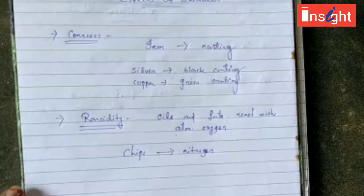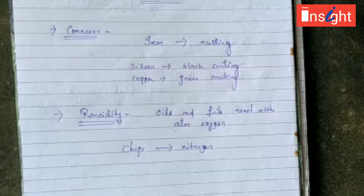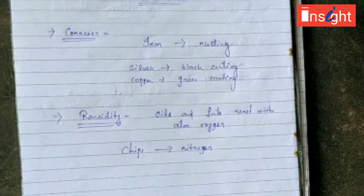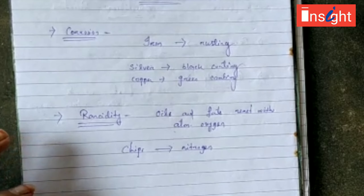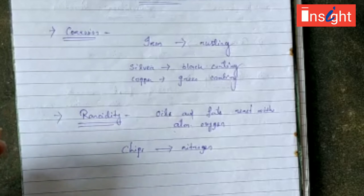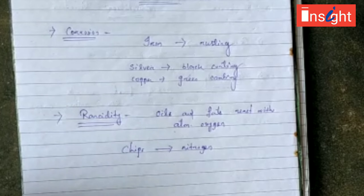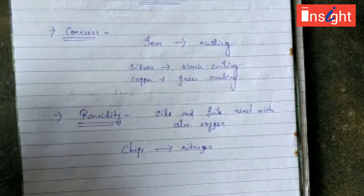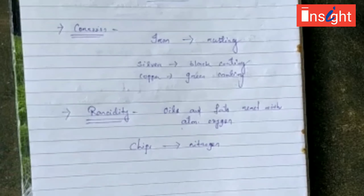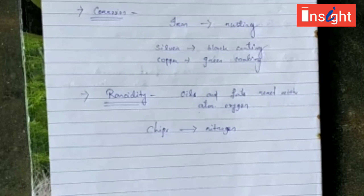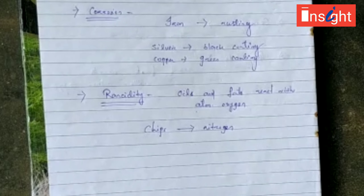In a combination reaction, two or more reactants combine to give a single product. In a decomposition reaction, a single reactant gives two or more products. When heat energy is released in a reaction, it is called an exothermic reaction. When heat energy, light, or electricity is absorbed to carry out the reaction, it is called an endothermic reaction. When a highly reactive element displaces a less reactive element from its aqueous solution, it is a displacement reaction. When an exchange of ions takes place between two aqueous solutions, it is a double displacement reaction. The reaction in which a substance gains oxygen or loses hydrogen is called an oxidation reaction.